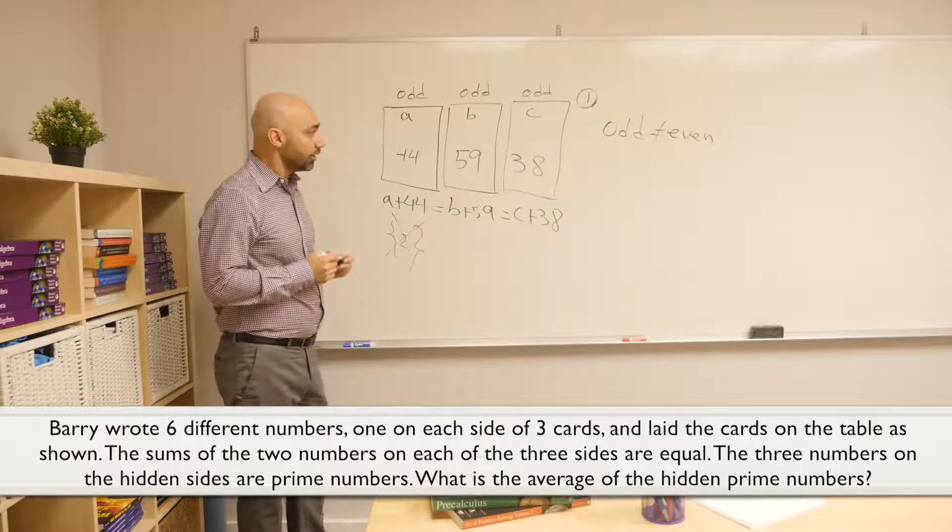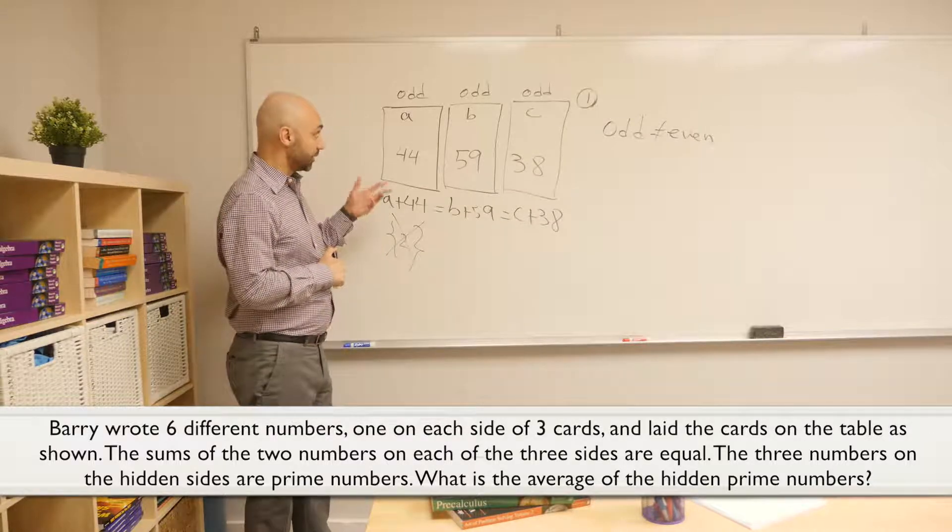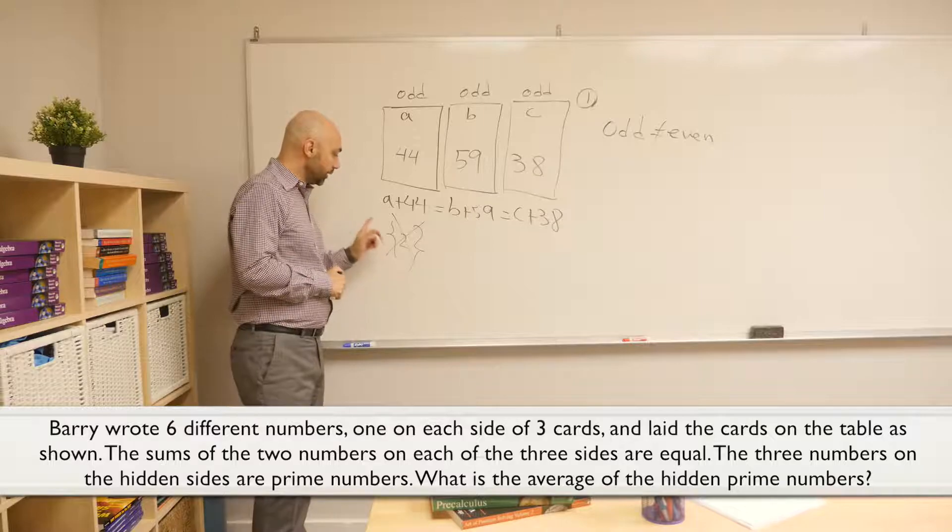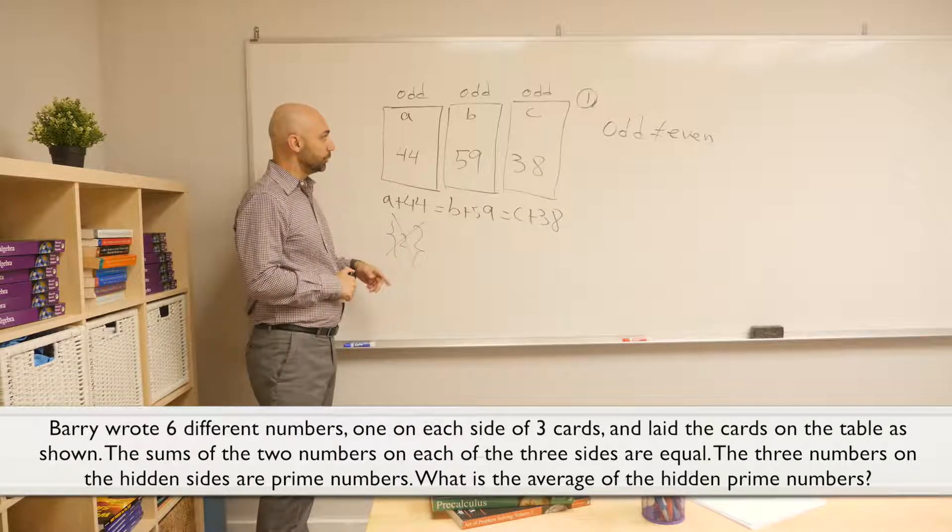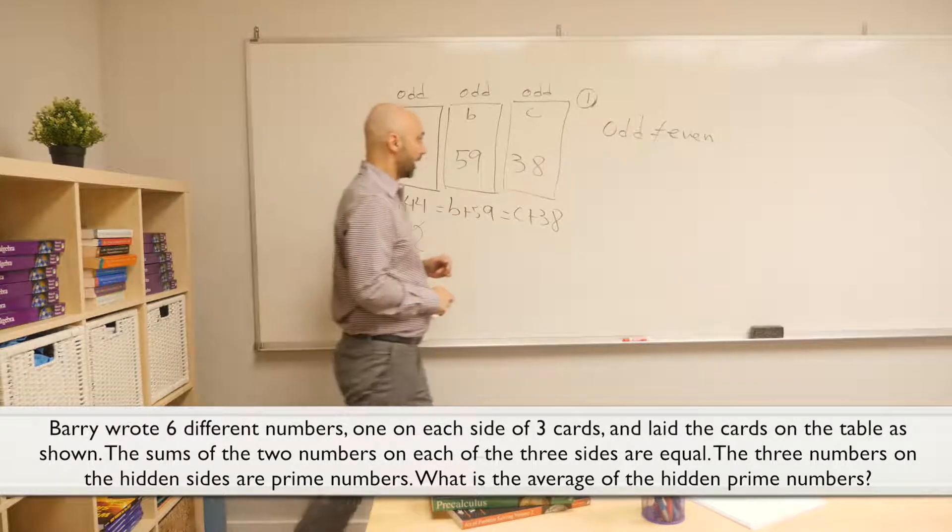Therefore, one of the numbers has to be even, one of the numbers in the back. And we know that the only prime number that's even is two, so one of the numbers in the back has to be two.